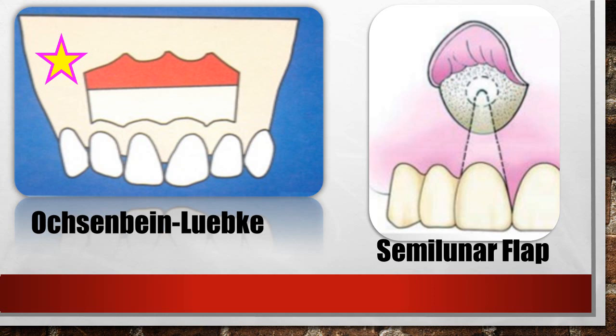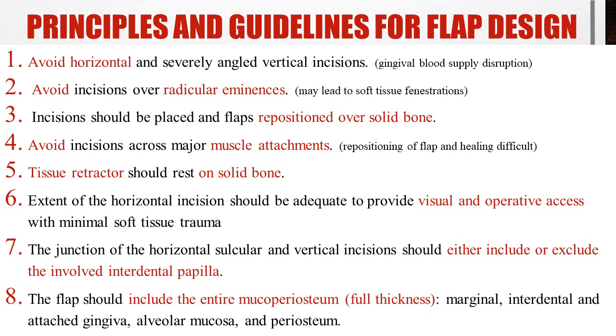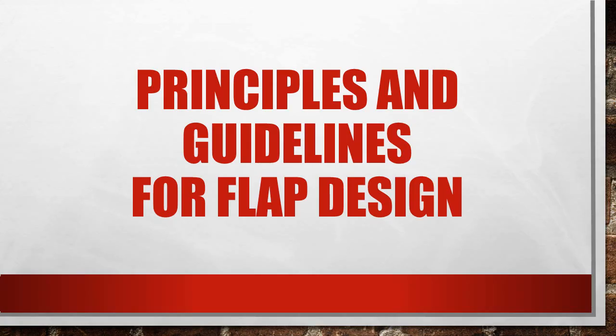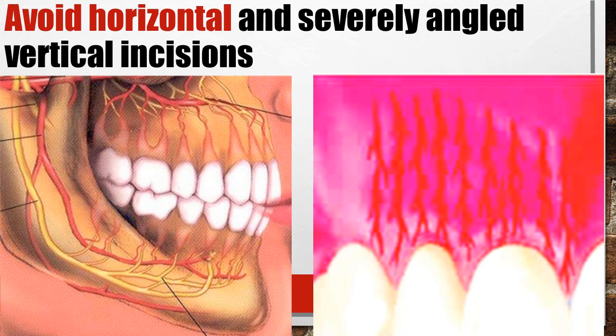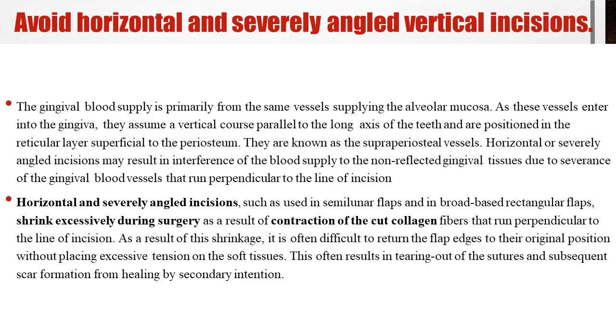Coming to the principles and guidelines for flap design. The first principle is to avoid horizontal and severely angled vertical incisions. The blood supply of the gingiva runs in a vertical manner. If you give a horizontal or severely angled vertical incision, you compromise the blood supply of the gingiva, delaying healing. This is why we prefer vertical and intrasulcular incisions — they help achieve better, faster healing because blood supply is not compromised.